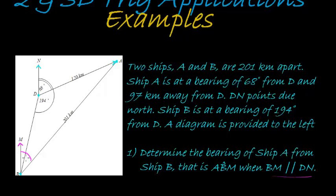Both of them are pointing north. So if I have to calculate the bearing of A from B, it's the same as: from north, what angle does the line between B and A make with north? So that angle right there. Now it is important that we take into consideration that BN and DN are parallel to each other.